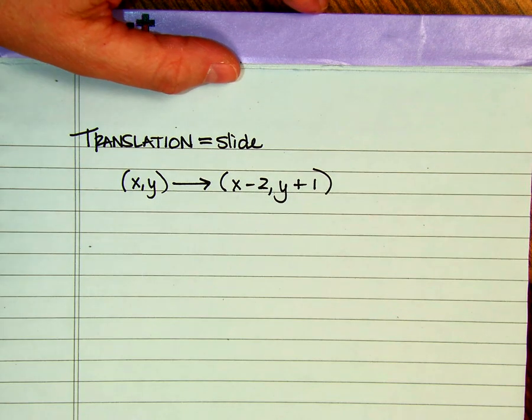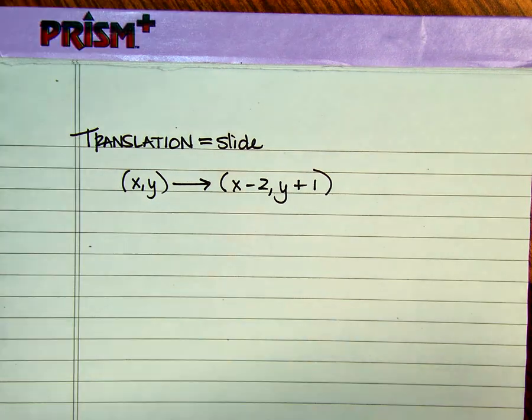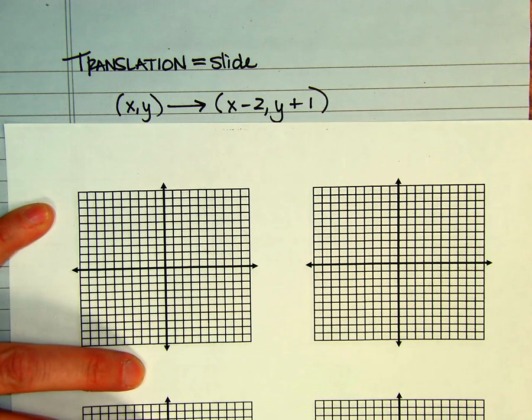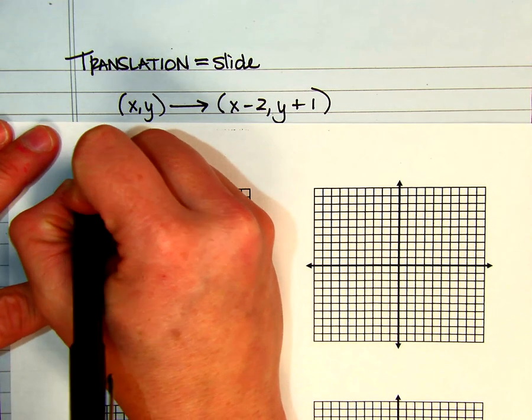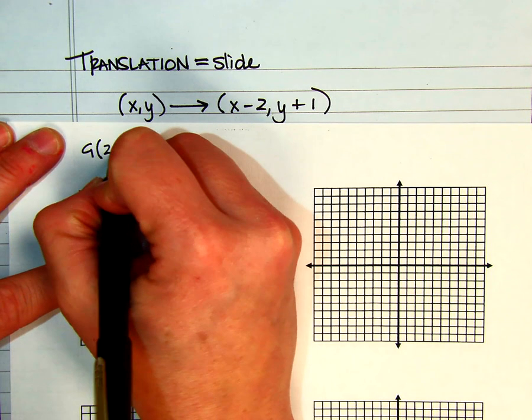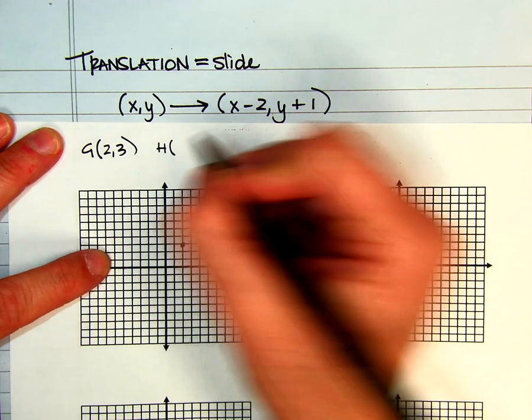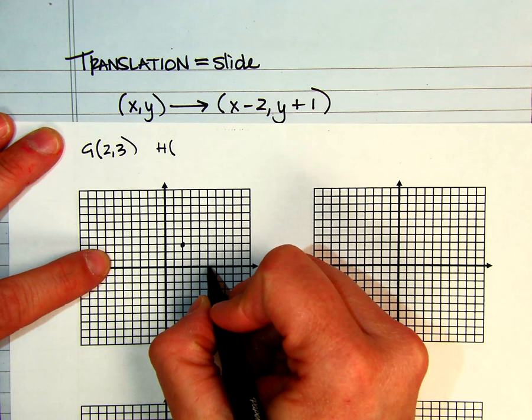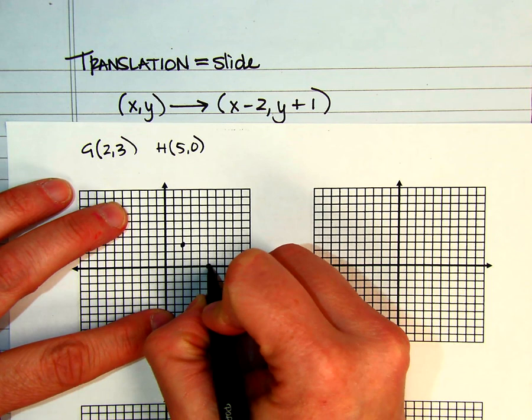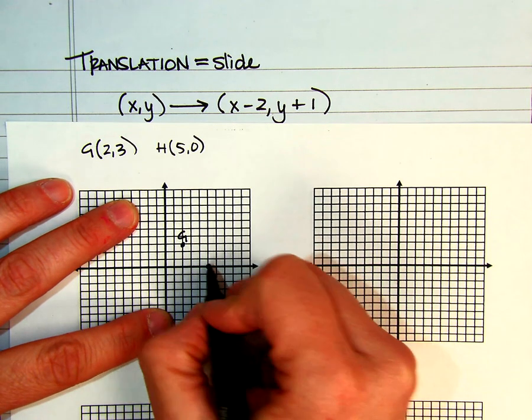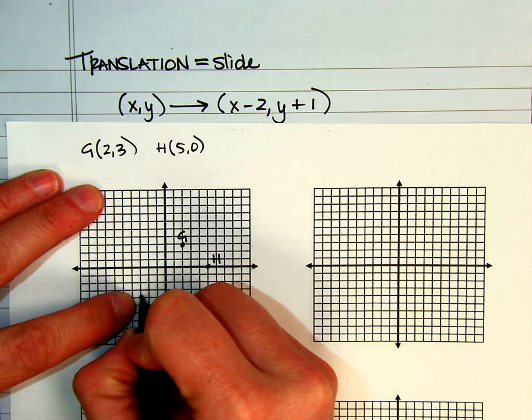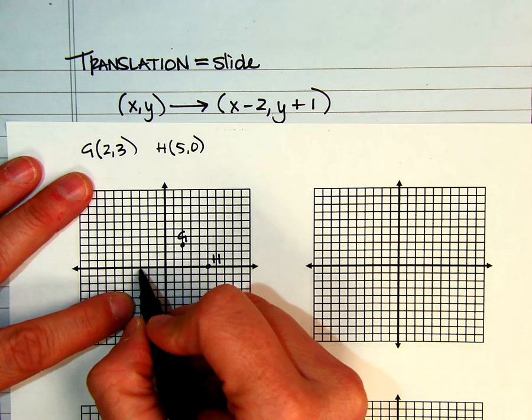What that means is that on your given coordinates, so let's start off with, I'm going to go ahead and use some graph paper here. So if I have G at (2,3), and I have H at (5,0). So here's G, here's H, and I'm going to go ahead and put J over there at (-3,-4).